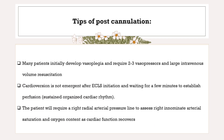After cannulating the patient, they will initially be vasoplegic, requiring two to three vasopressors and large intravenous volume resuscitation. We should not be in a hurry to wean vasopressor or inotropic support; first, we should correct the patient's volume status. Cardioversion is not emergent after ECLS initiation — we should wait a few minutes until perfusion is established and an organized cardiac rhythm is sustained. The patient will require a right radial arterial pressure line to assess right upper extremity arterial saturation and oxygen content as cardiac function recovers.